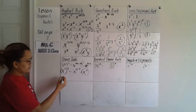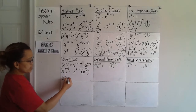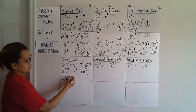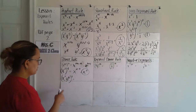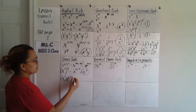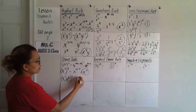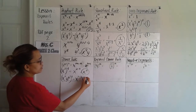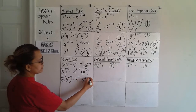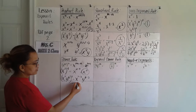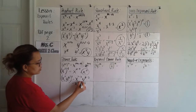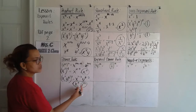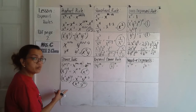Another example: x squared, y to the 4th, raised to the 3rd power. It looks complicated but it's not. x squared times 3, y to the 4th times 3. The answer is x to the 6th, y to the 12th power.